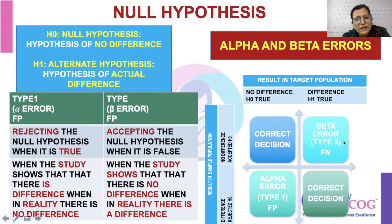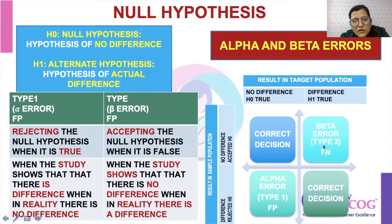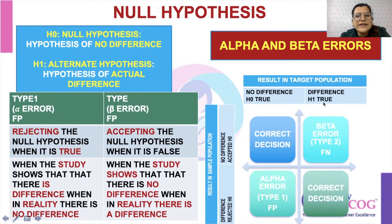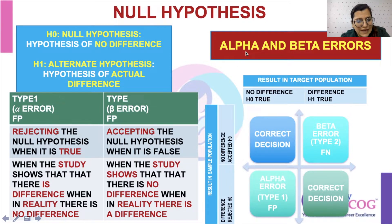The other type of error is Type 2 or beta error, also known as false negative. This is when you accept the null hypothesis when it is actually false — meaning the study shows there is no difference when in reality there is a difference. So alpha is rejecting the null hypothesis when it is true, and beta is accepting it when it is false.